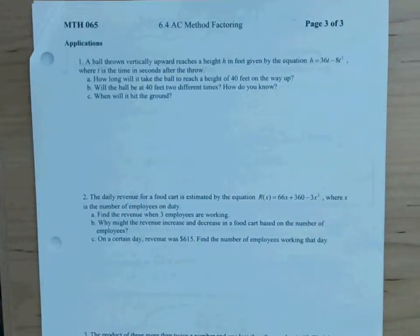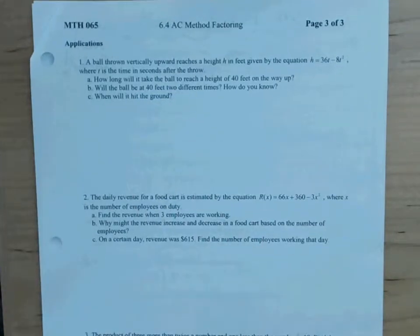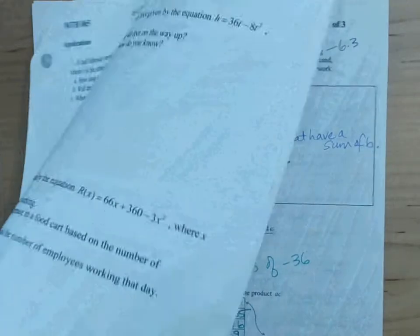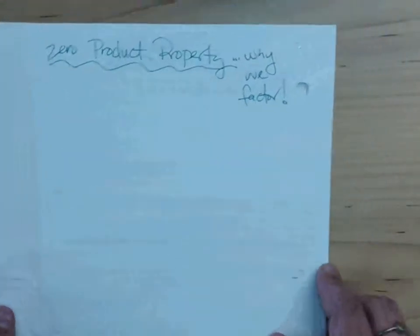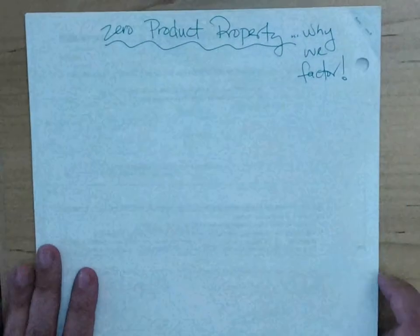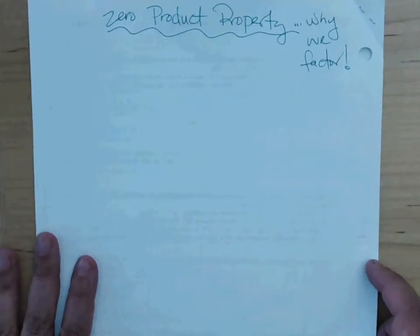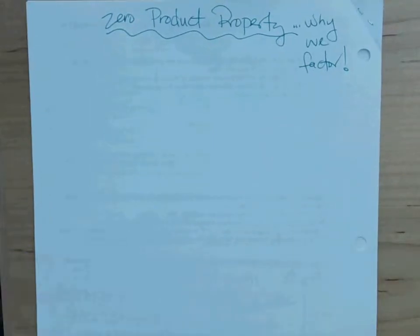Okay, welcome to Math 65. Today we're going to finish up 6.4, the AC method, but before we talk about this last page, there are three different word problems here and I might go ahead and add another one to the mix. Let's go ahead and turn to the back page and talk about this zero product property. So let's break this down.